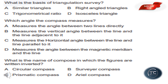Which angle does the compass measure? The options are: measures the angle between two lines directly; measures the vertical angle between the line and the line adjacent to it; measures the horizontal angle between the line and the line parallel to it; measures the angle between the magnetic meridian and the line. The answer is option D: measures the angle between the magnetic meridian and the line.